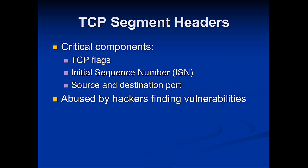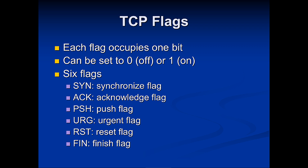Other critical components of TCP are our flags, our Initial Sequence Number (ISN), and our source and destination ports — which are commonly targeted by hackers looking for vulnerabilities. The flags are: SYN for synchronization, ACK for acknowledgement, PSH for push, URG for urgent, RST for reset, and FIN for finish. Each flag occupies one bit — either zero or one, off or on.